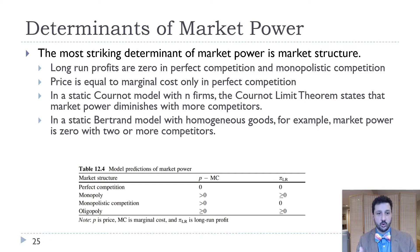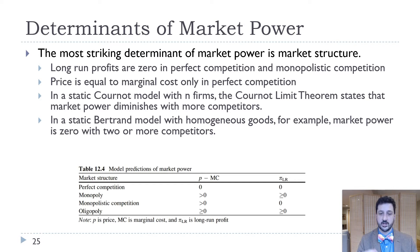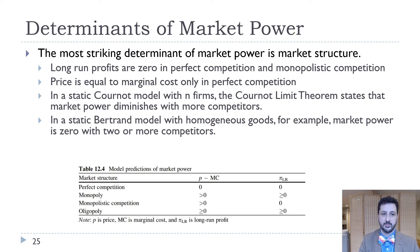In a Cournot oligopoly, we'll have long-run profits and price larger than marginal cost, but somewhere in between perfect competition and monopoly. Whereas in Bertrand, we get no market power with just two or more competitors.